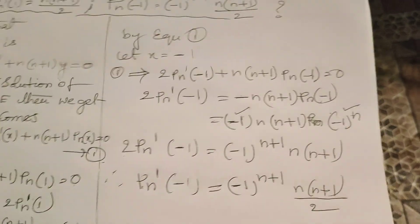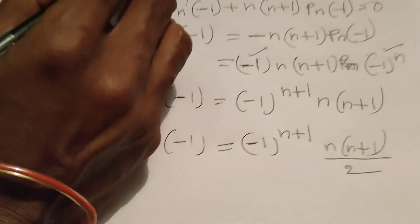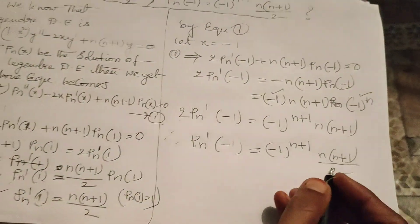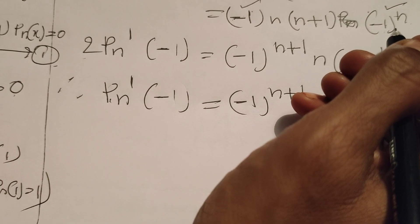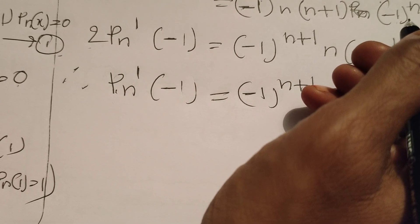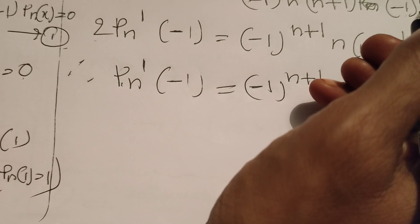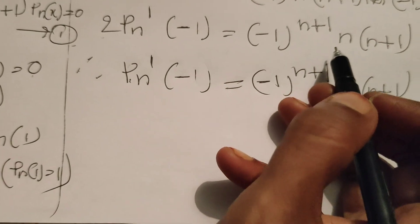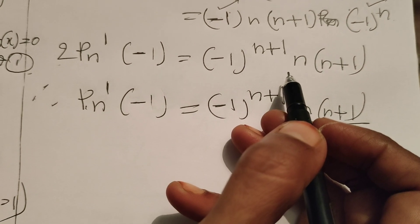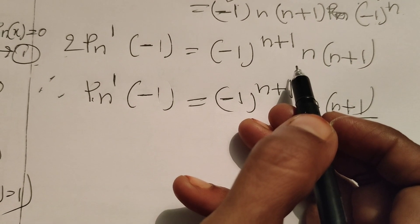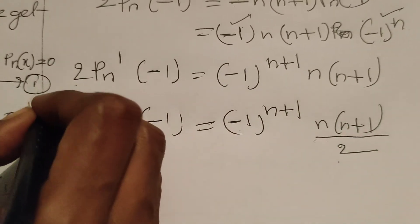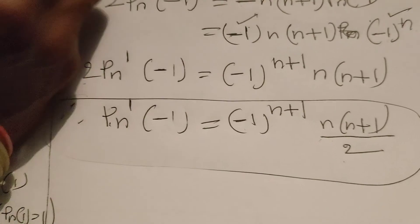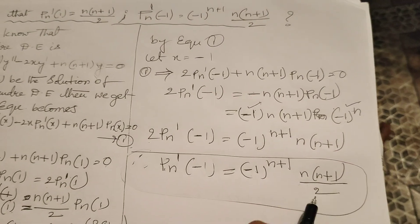Therefore P'n(-1) = (-1)^(n+1) · n(n+1) / 2. After transposing and dividing by 2 we get the final result. Hence we have proved the result: P'n(-1) = (-1)^(n+1) · n(n+1)/2.